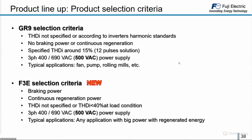F3 selection criteria: choose the F3 when there is braking power and the motor is regenerating energy in quantities large enough to consider alternatives to a braking resistor, especially when regenerated energy is continuous — making a braking resistor very large and wasteful — and when THDi below 40% is acceptable. Applicable power supplies are 3-phase 400 V, 690 V, and 500 V. Typical applications include cranes and high-power regenerative systems.